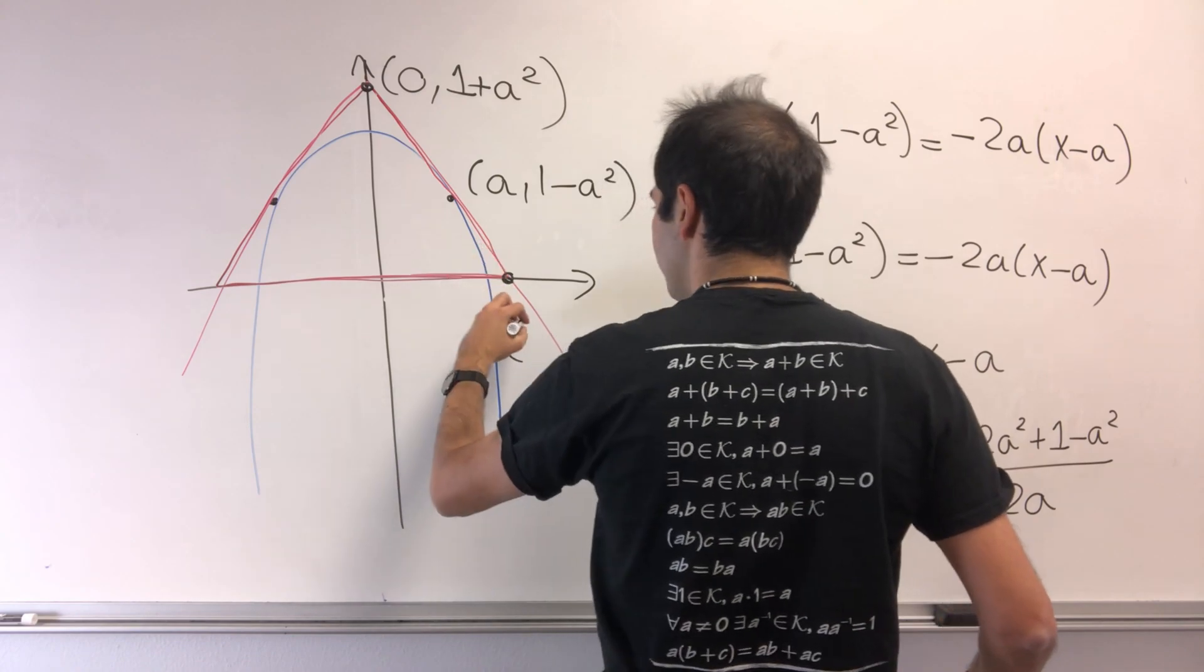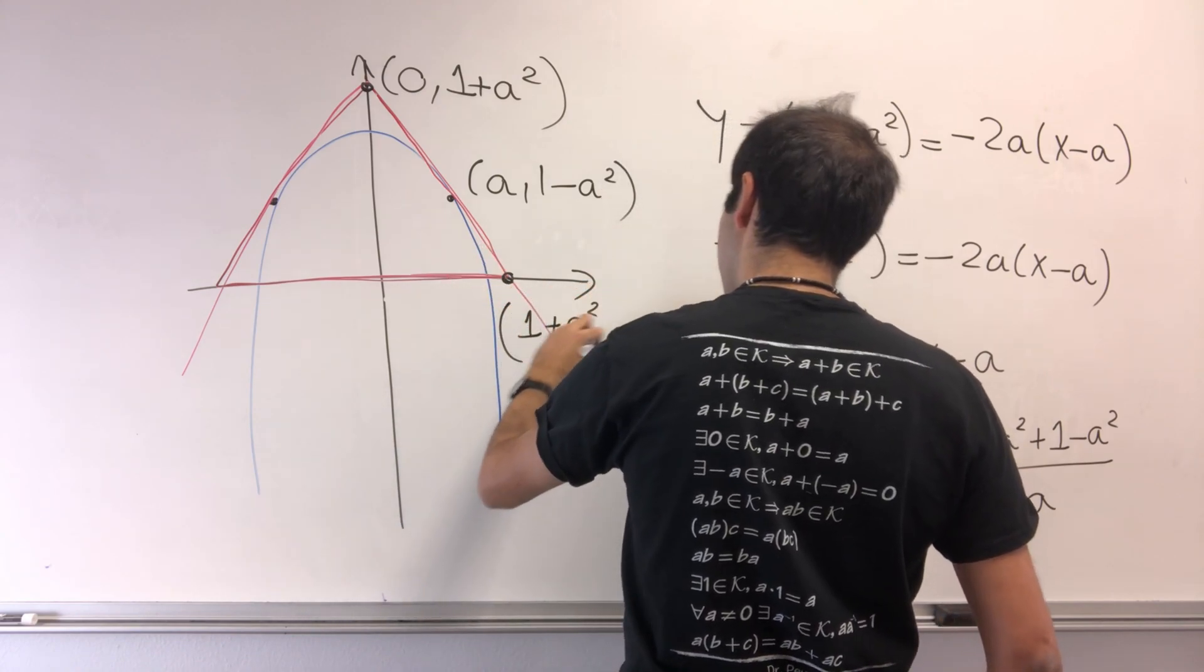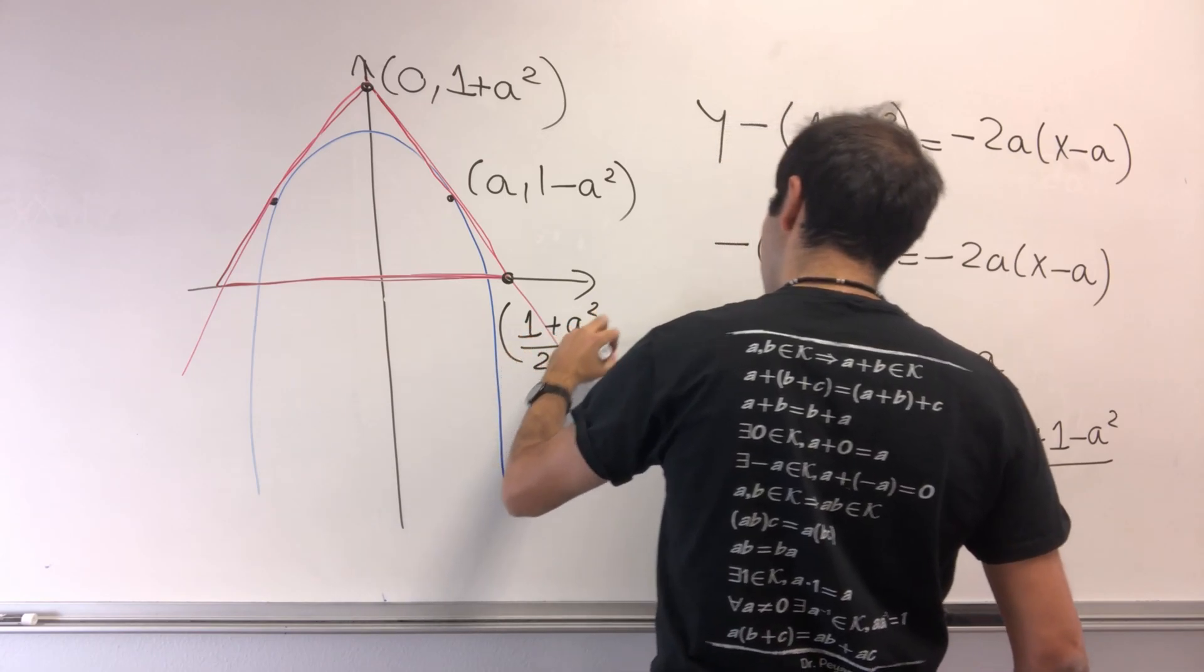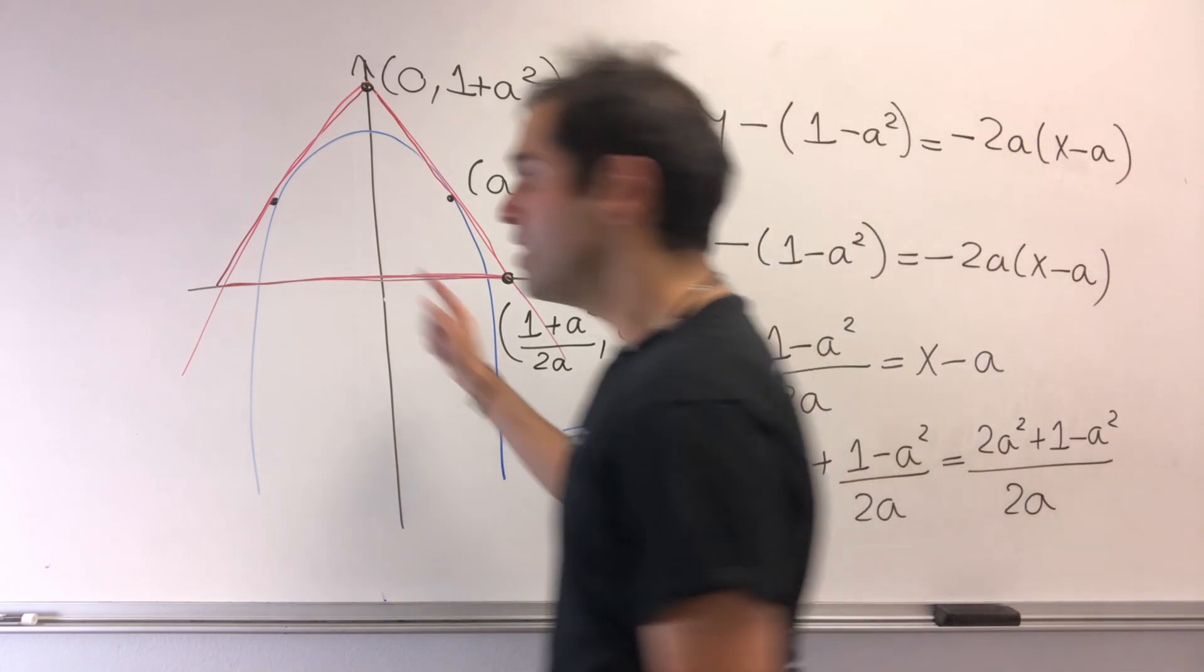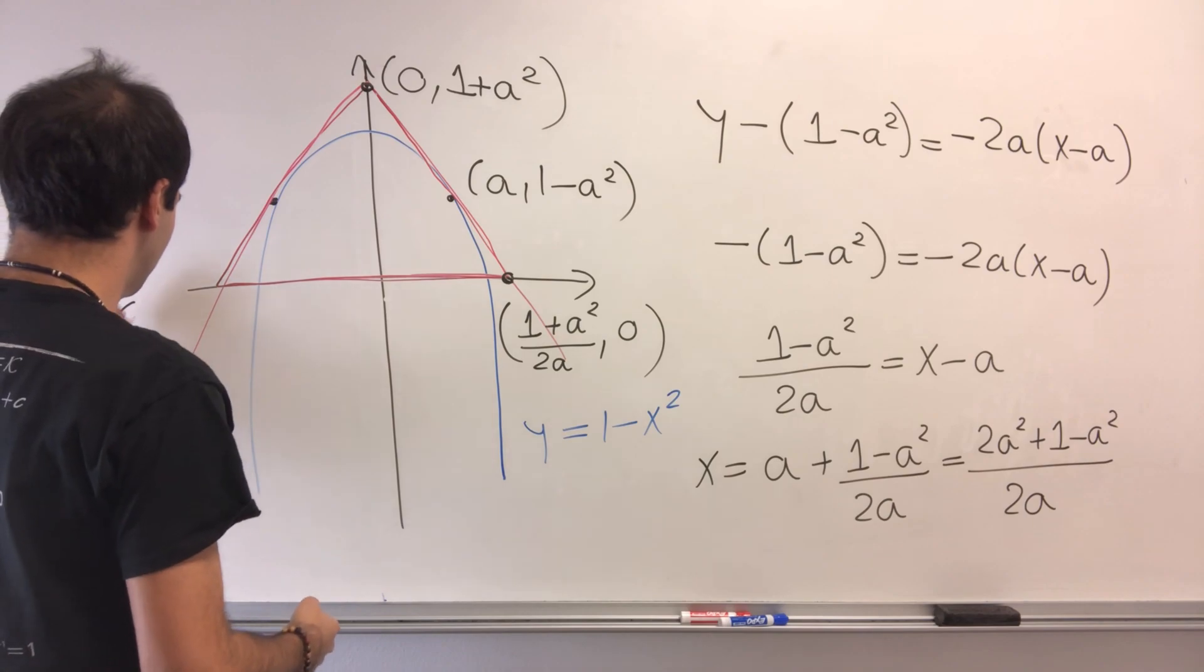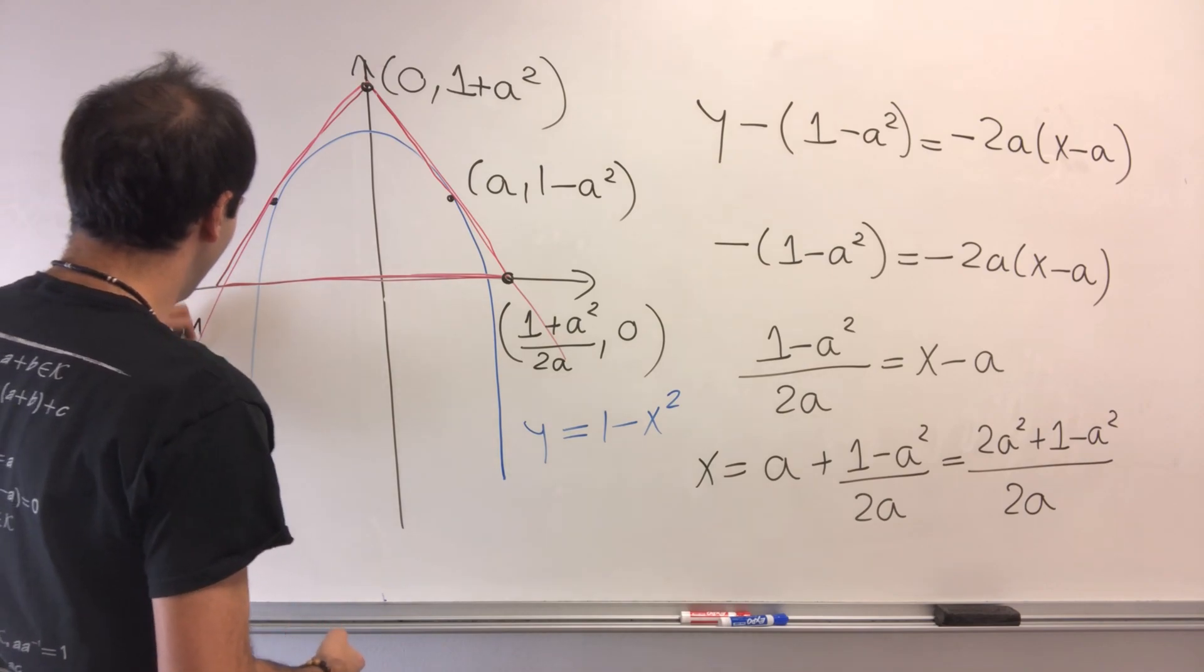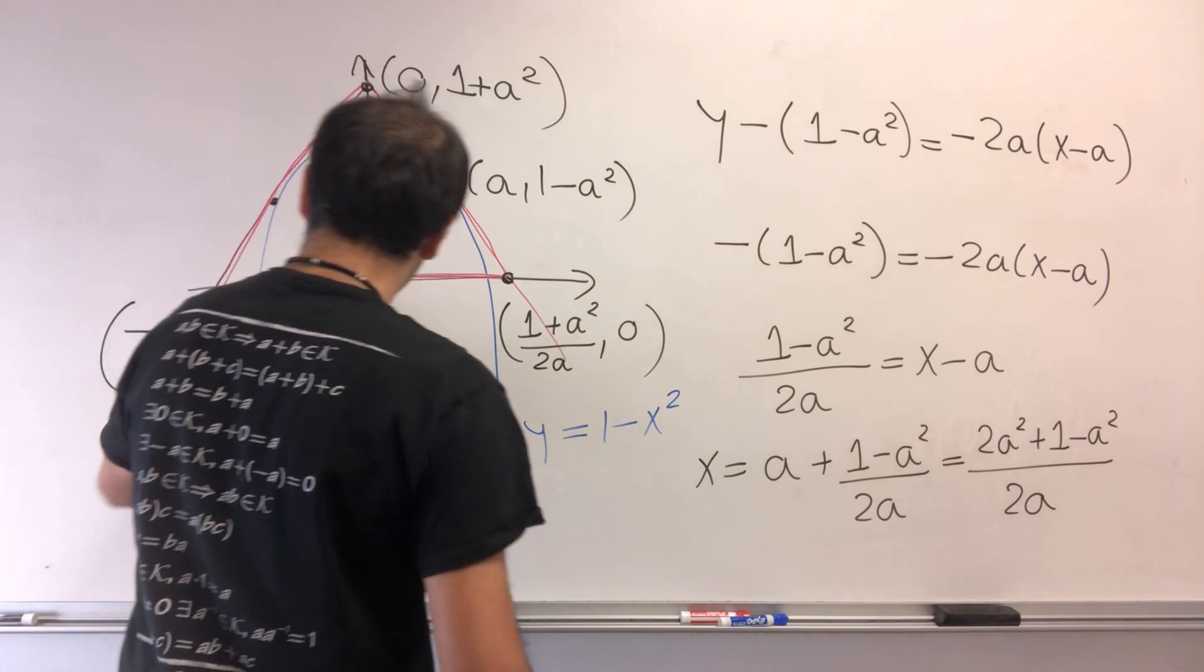So what we get is now this intercept: (1 plus a squared over 2a, 0). And by symmetry, the other point is the opposite: (minus 1 plus a squared over 2a, 0).